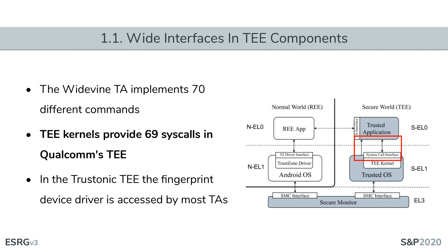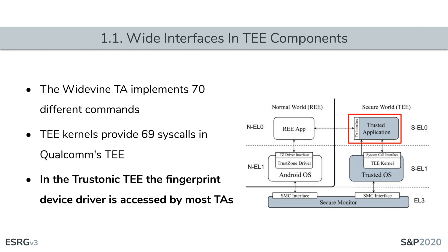The second way TE interfaces might lower security is by having the trusted OS provide trusted applications with access to too many system calls. For example, the Qualcomm TE provides 69 different system calls to its trusted applications. Some of these effectively give high privileges to trusted applications — for example, by giving them access to map normal world memory, trusted applications can compromise a normal world OS. Third, secure device drivers may be accessible to more trusted applications than required for the system to perform its functions, which can prove instrumental to building powerful attacks.